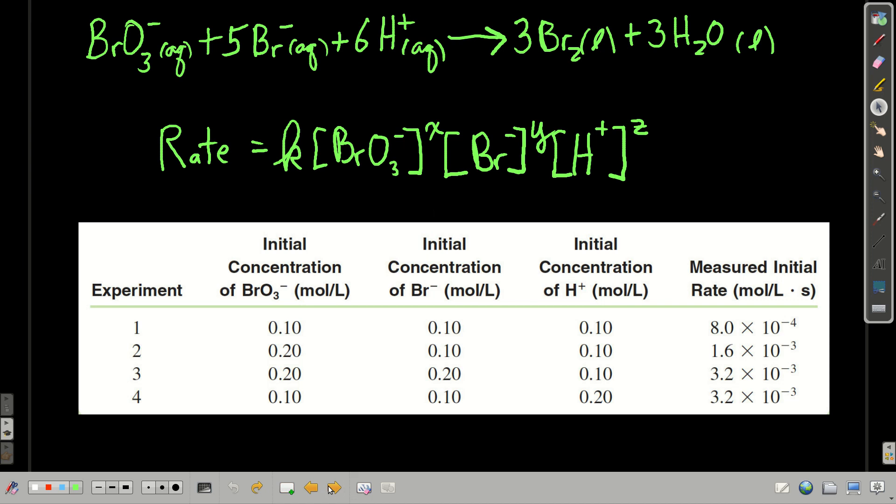So our sample that we're going to use is this reaction here, the reaction of bromate with bromide and hydrogen ion to make bromine, liquid bromine and water. So we know from looking at the reaction, from the chemical equation, that the rate law is going to look like this. The rate is going to be equal to k times the concentration of each of the reactants raised to some power.